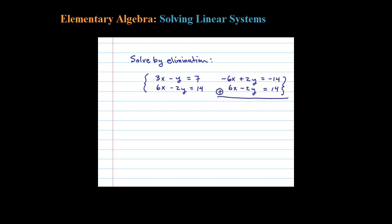But also 2y minus 2y is 0, so we get 0 equals 0. Now that looks like no solution, doesn't it? But in fact, that's a true statement, that's an identity.